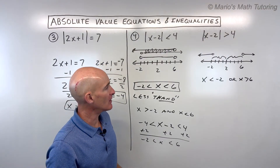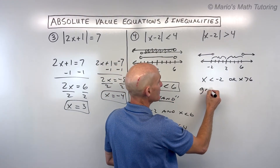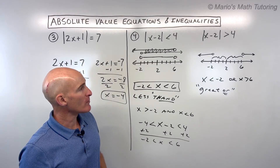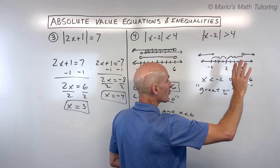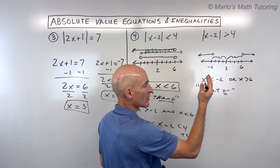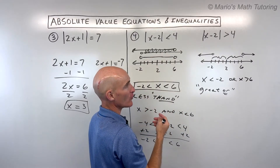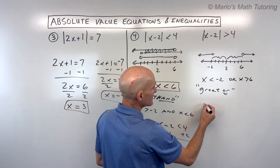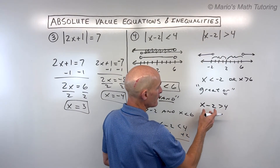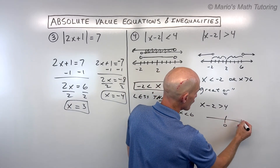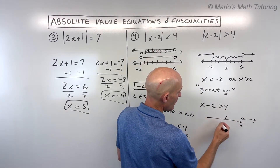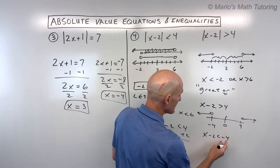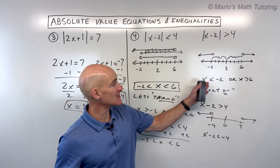A memory trick: 'greater' kind of sounds like 'or.' When you see greater than in an absolute value inequality, you split it: the quantity inside is greater than the positive value, or less than the negative value. So x minus two is greater than four, or x minus two is less than negative four. Solving these individually gives the same final result — two separate inequality solutions.